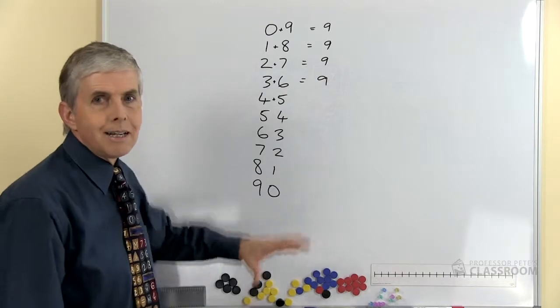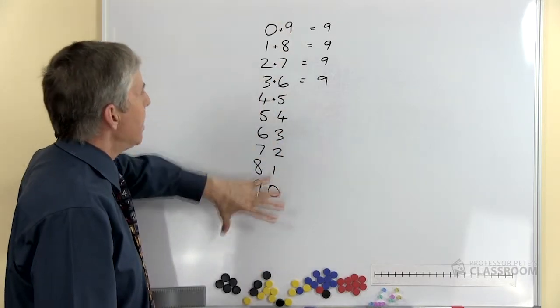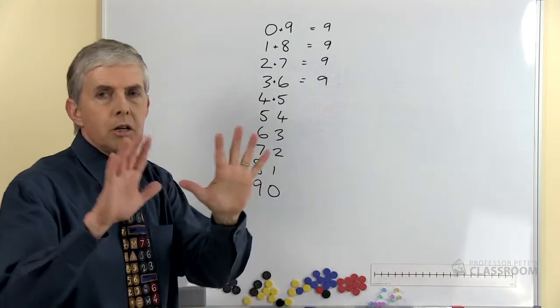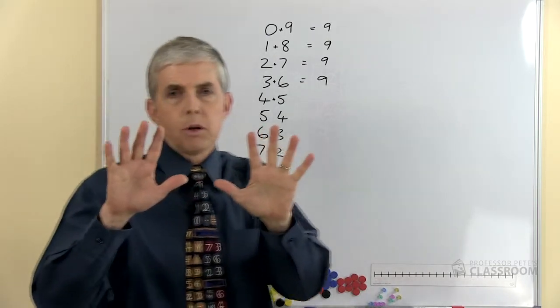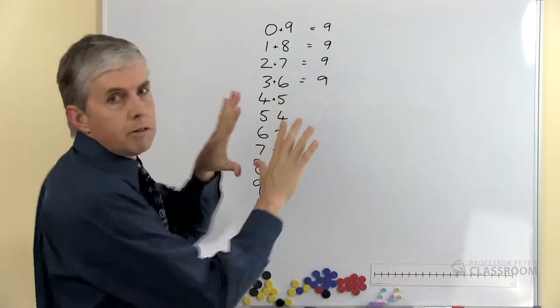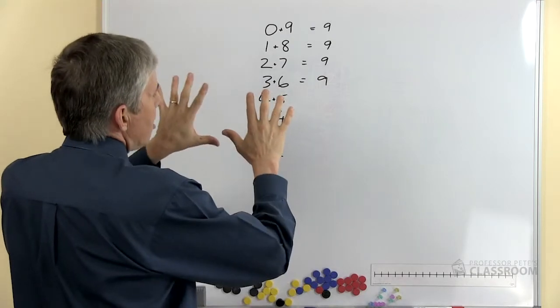Here's another idea using this same pattern. Noticing that there are always nine in the two digits, we can use the fingers of our two hands. So put your two hands up like this. Now you need to, I'm going to turn around so you can see my hands from my side.